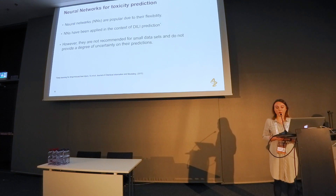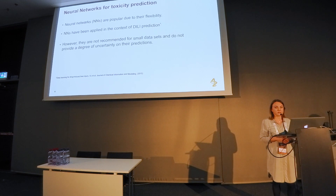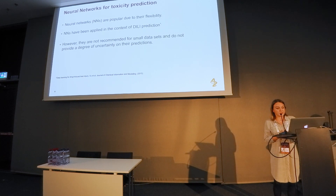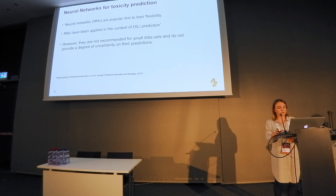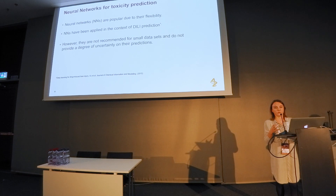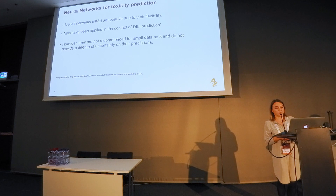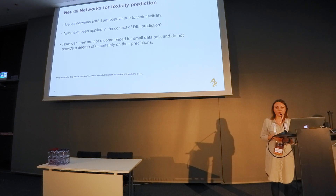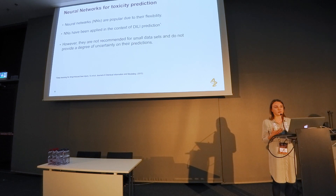Neural networks are applied in a wide variety of fields because they are very flexible and able to approximate highly non-linear functions. They have also been used for prediction of drug-induced liver injury — for instance, in the DOCS21 competition, the winning team constructed a neural network. However, when we work with small datasets in real life, classical neural networks cannot perform inference in a robust way due to insufficient data, and their predictions do not provide extended information about uncertainty.